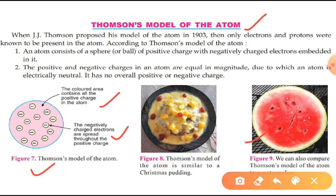This small volume at the center was called the core and later named the nucleus. So this was the first limitation of Thomson's model. One more limitation follows.